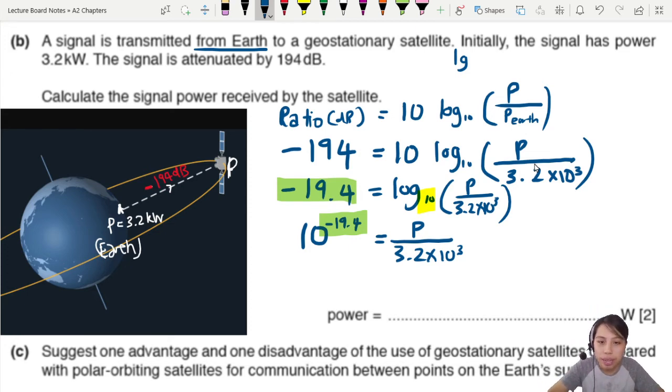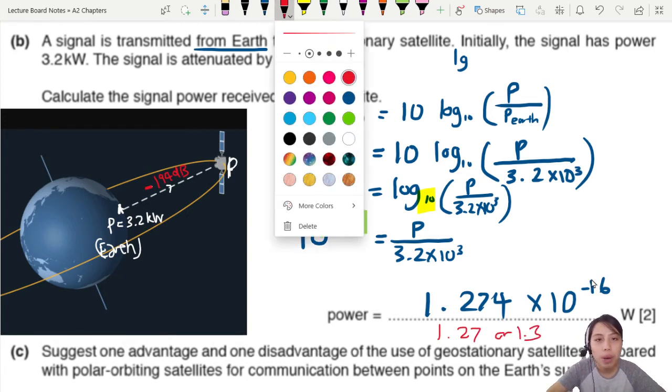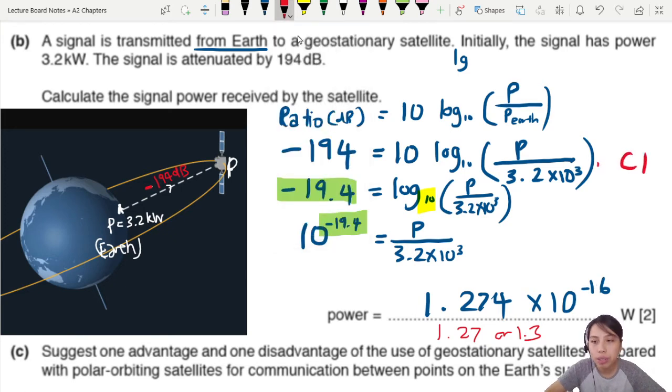If you press calculator, you will get a value of P equals to, no space to write it here, I just write the answer line, 1.274 times 10 to the negative 16. Wow, that's a lot of power loss. You start off with 3.2 kilowatt, now you end up with 10 to the power of negative 16 watt. You see the amount of signal loss we have here? You can write this out as 2SF. I think most of the answers here are 2, 3SF. 2, 3SF is fine, so you can do 1.27, 1.3 also no problem. Two marks, one mark goes to you knowing how to use or substitute into your ratio attenuation equation, the decibel attenuation equation, and lastly for your final answer.